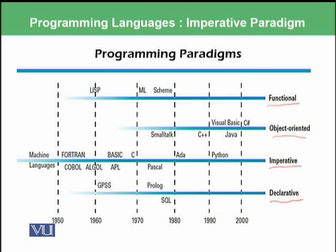In the next modules, we will be discussing all of these paradigms in a little more detail. In today's module, we will be focusing on the imperative paradigm, on which these languages have been built: starting from machine language, Fortran, COBOL, Basic, C, Pascal, Python, Ada, and other languages as well.